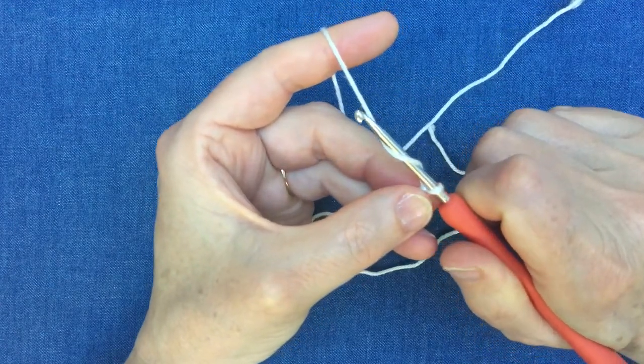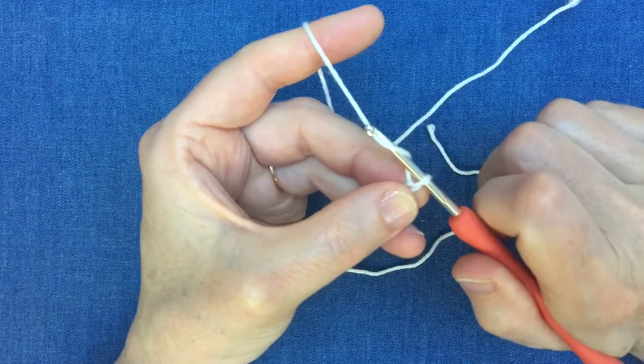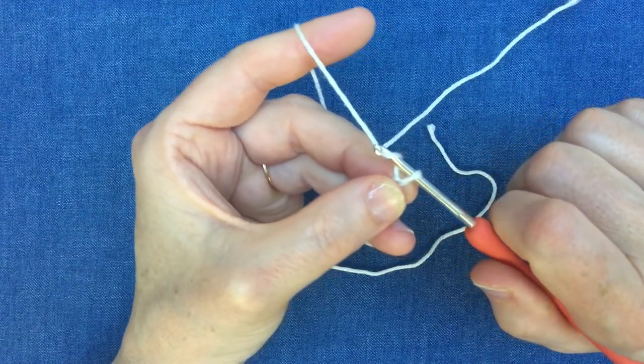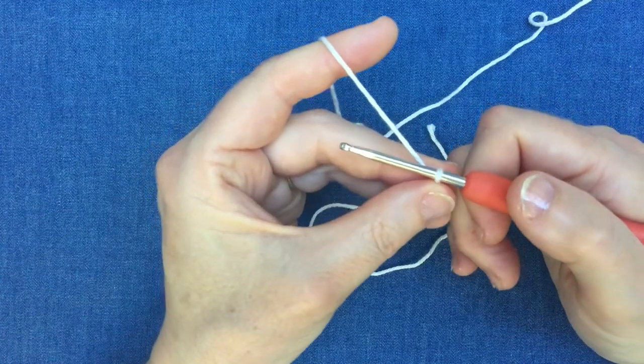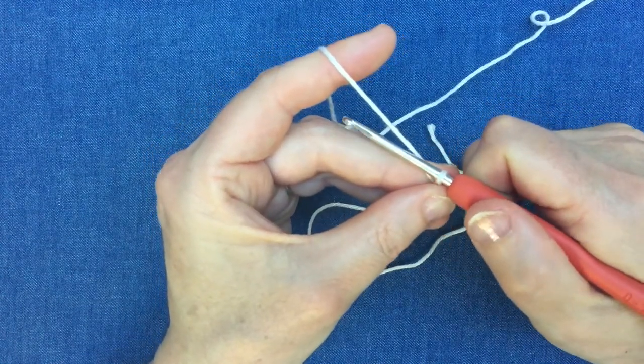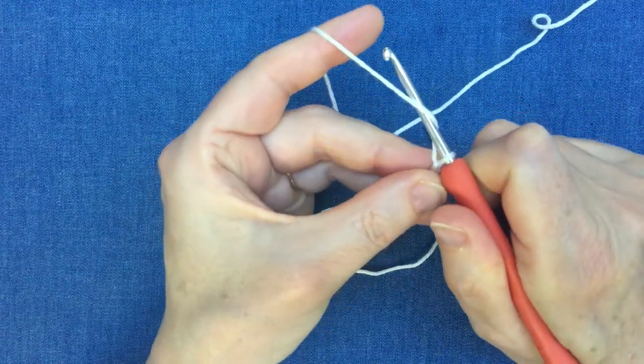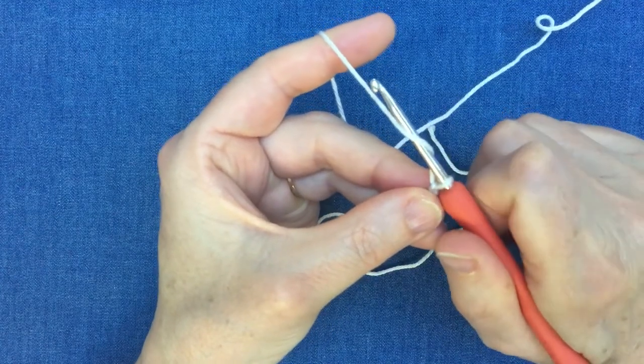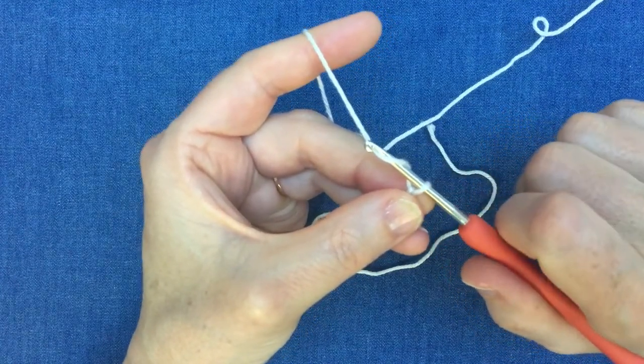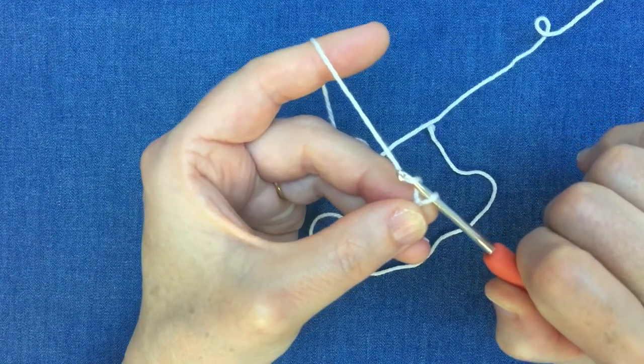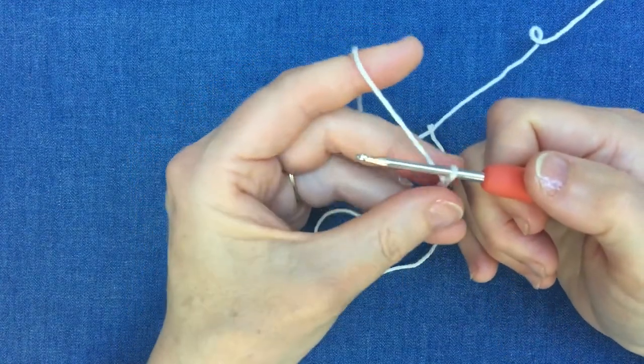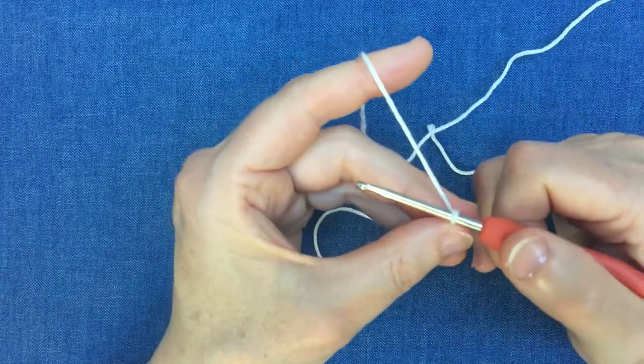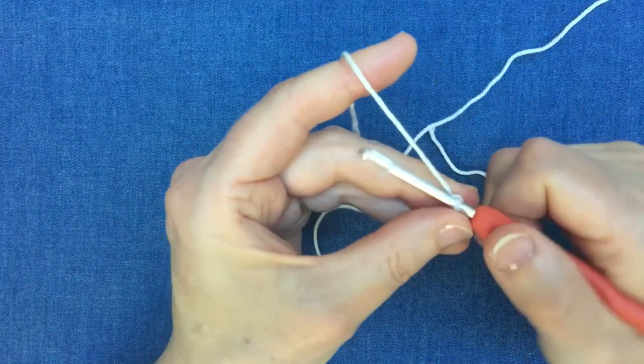Gently pull the hook down, it'll catch in the crook at the top of the hook, and then you can pull it through your stitch. I'll do that again. So running underneath so the yarn is going over the hook, gently pull the hook down and you will be pulling your tension thread through your chain or making a chain, or you're pulling your thread through your stitch.